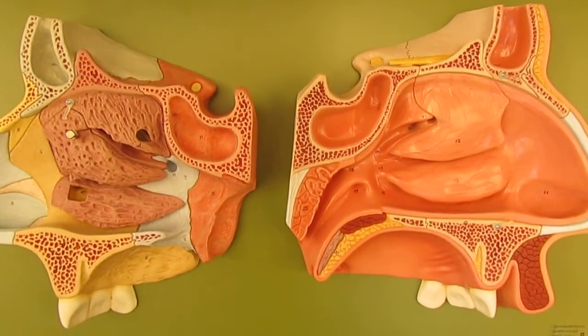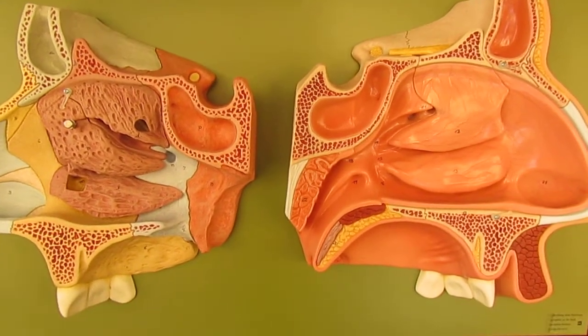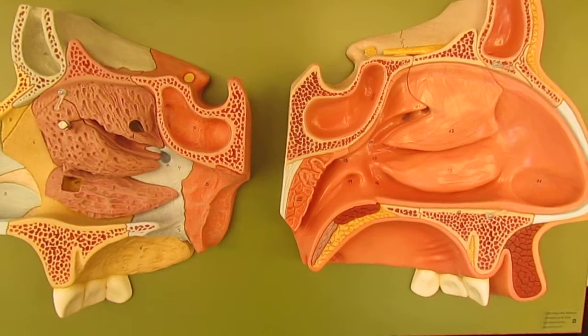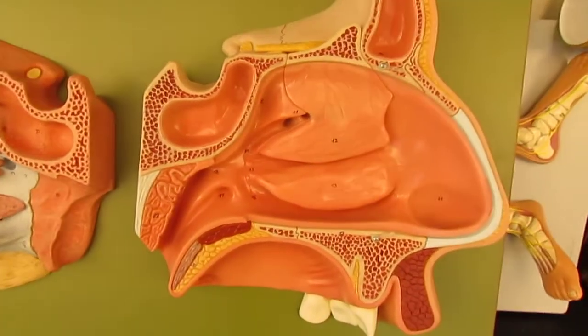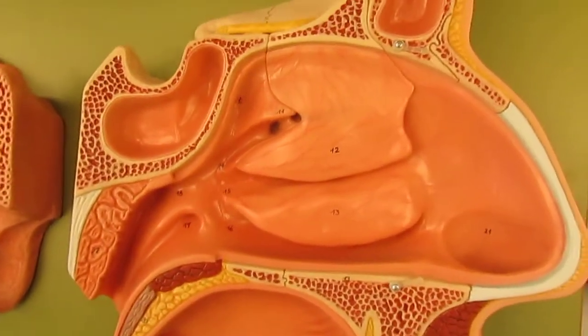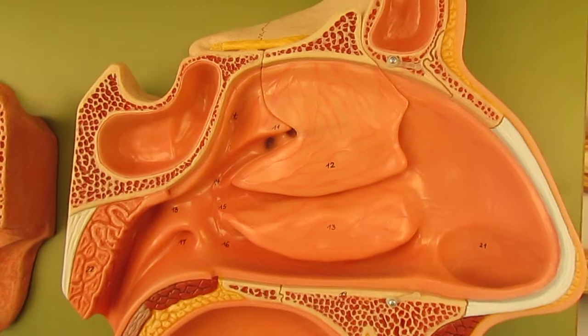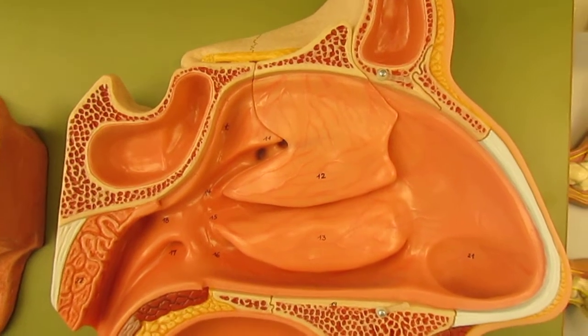On this model, we can see structures associated with the sense of smell or olfaction. We are going to zoom into half of this model. Over here, what we can see is part of the left nasal cavity.